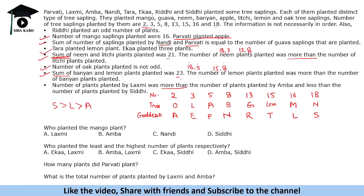The first question: who planted the mango plant? Mango was planted by Lakshmi. The least and highest number of plants: least is by Amba and highest is by Siddhi. How many plants did Parvati plant? Parvati planted 5 plants. What is the total number of plants planted by Lakshmi and Amba? Lakshmi planted 16 and Amba planted 2, so a total of 18 plants. Please let me know in the comments how much time you took. Keep watching this series every day at 9 PM for daily set solutions. Thank you for watching.